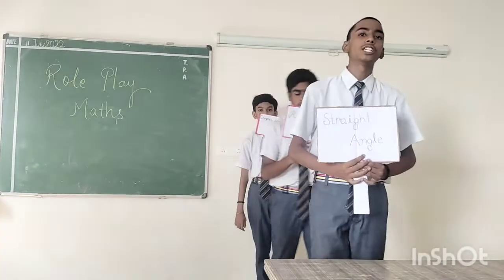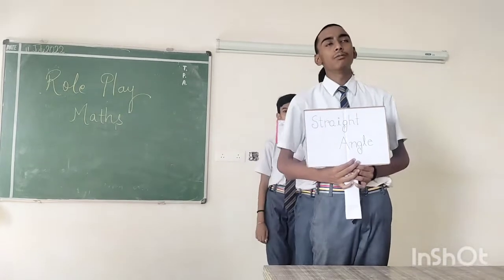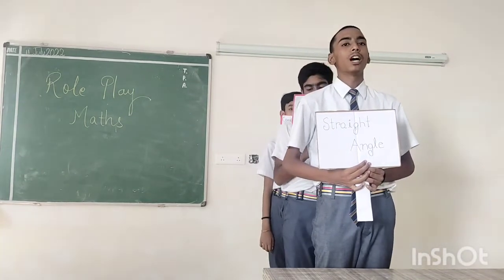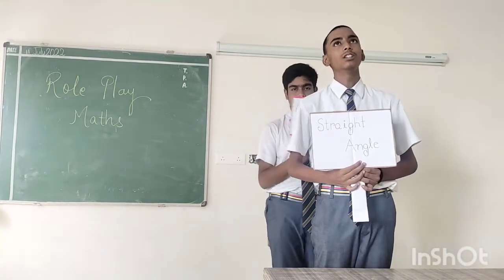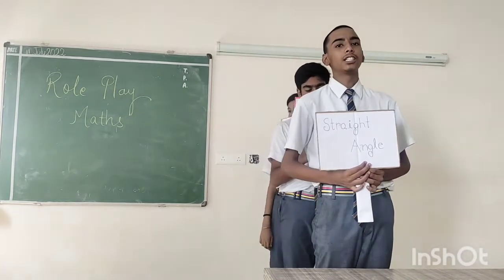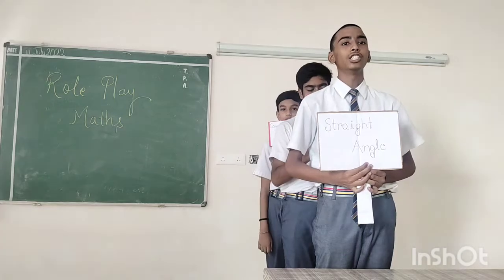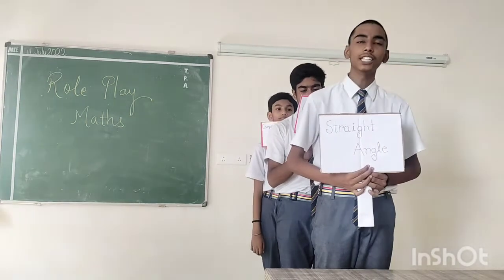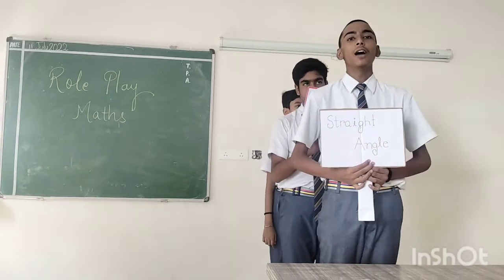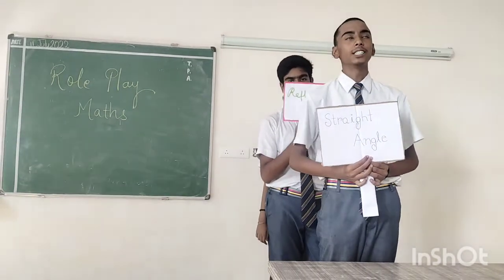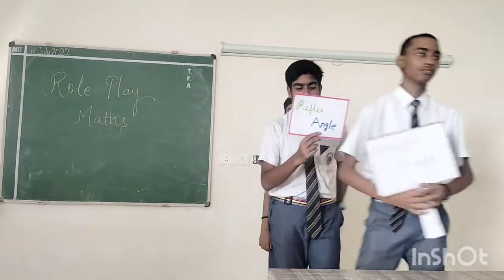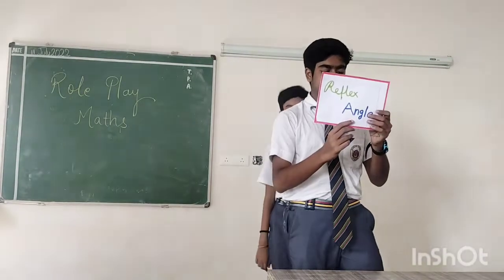I am a straight angle. I am formed when two legs or arms extend in opposite directions. I am very easy to be identified. My measure is 180 degrees and my second name is flat angle. Thank you.